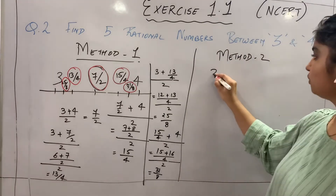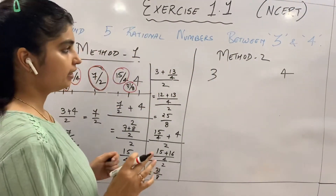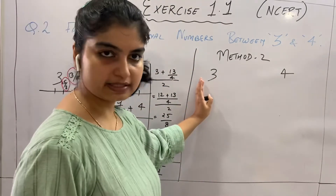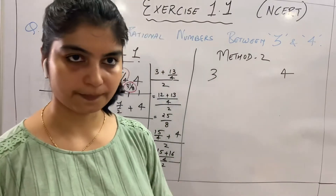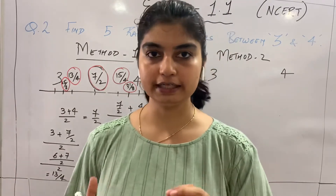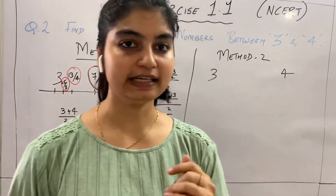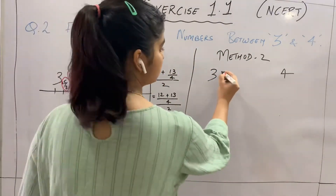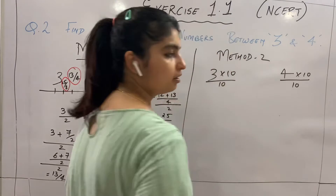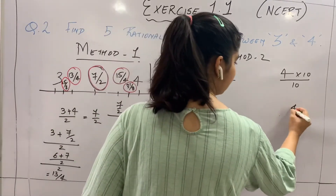Method 2: To find five rational numbers between 3 and 4, write the smaller number on the left and bigger on the right. Since we need 5 rational numbers, multiply and divide both numbers by any number greater than 5 — let's choose 10. So 3 × 10/10 = 30/10, and 4 × 10/10 = 40/10.